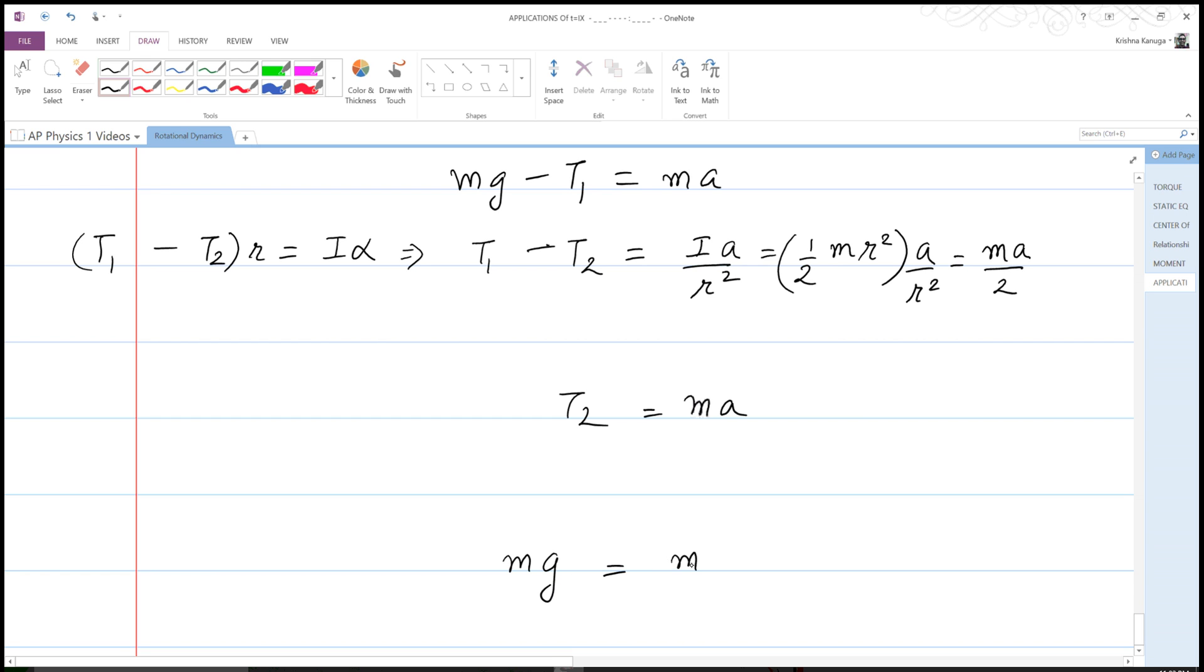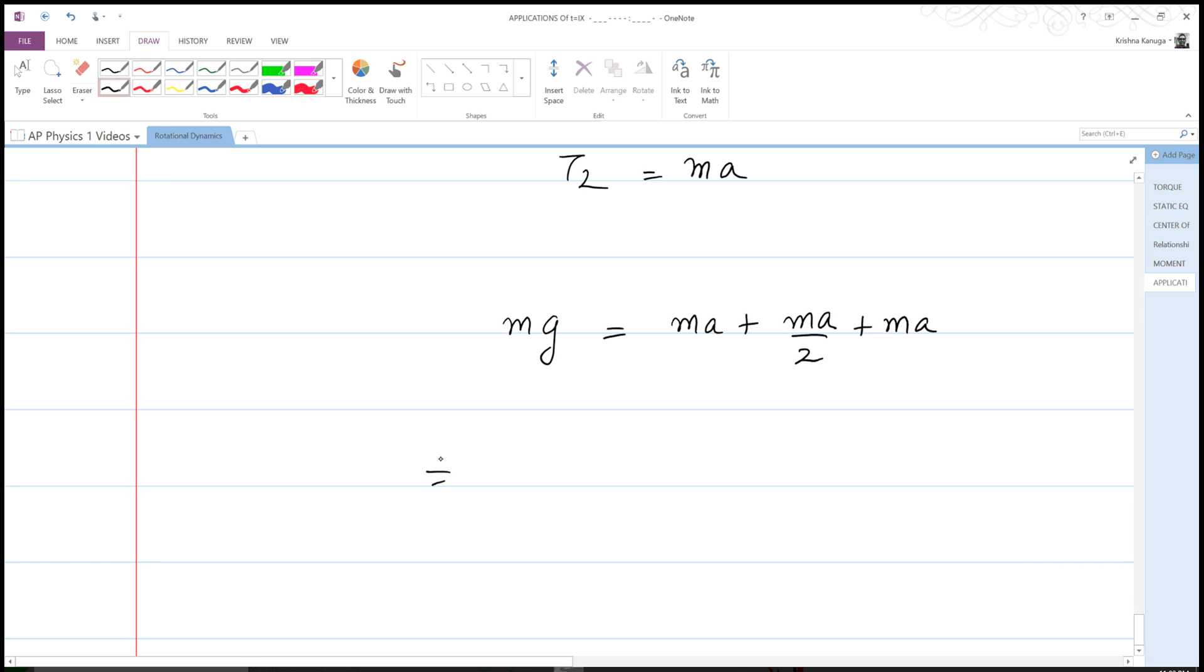And so when I add them up, I get mg on one side. Everything else gets cancelled away is equal to ma plus half ma plus ma. And so this tells me that mg is equal to 2 plus half, which is 5 halves ma. So therefore a is equal to 2g over 5.